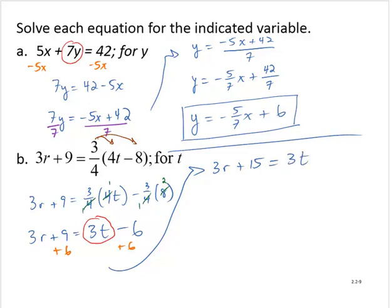And to isolate the variable t, I'll divide through by 3. And like I did in the previous exercise, I'm going to break up this big fraction into two terms. 3 thirds r plus 15 thirds is equal to t. And simplifying each of those fractions, I have r plus 5 is equal to t.